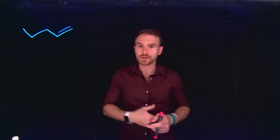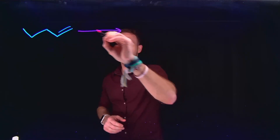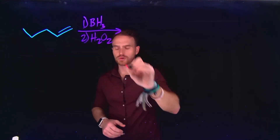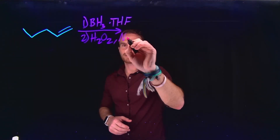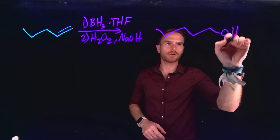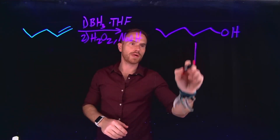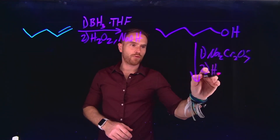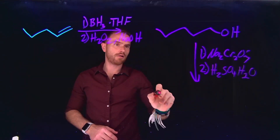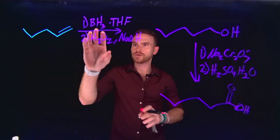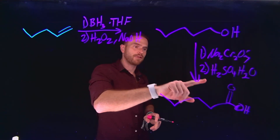Multi-step synthesis is integral to organic chemistry, requiring knowledge of previous reactions. For example, using hydroboration-oxidation — adding BH3 and H2O2 in THF with sodium hydroxide as base — places an oxygen at the terminal position of an alkene, converting it to a primary alcohol. From there, a strong oxidizing agent like Na2Cr2O7 in H2SO4 and water oxidizes the primary alcohol to a carboxylic acid. This is how 1-pentene is converted to pentanoic acid.